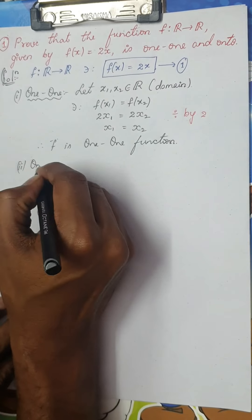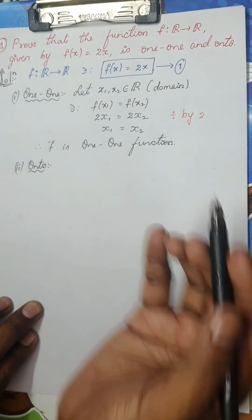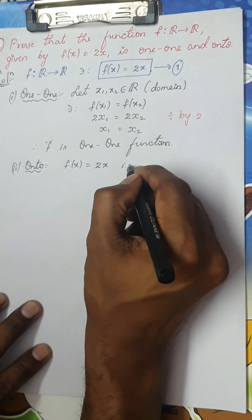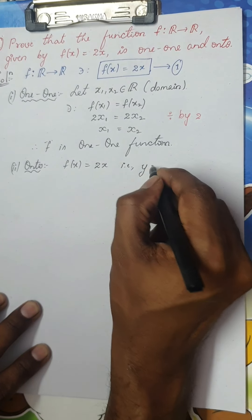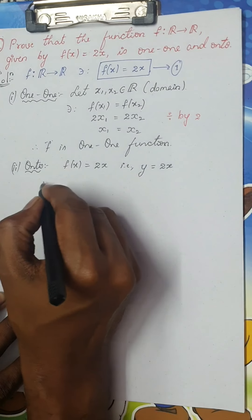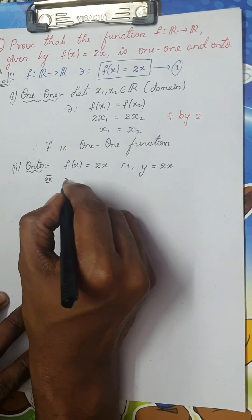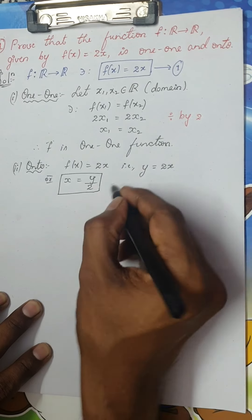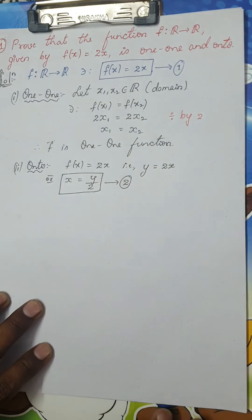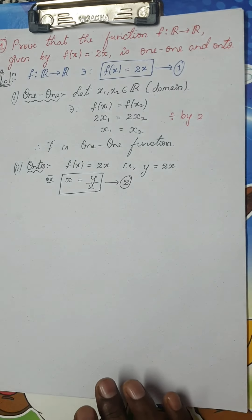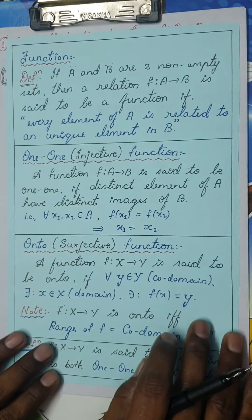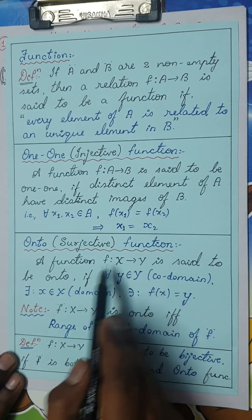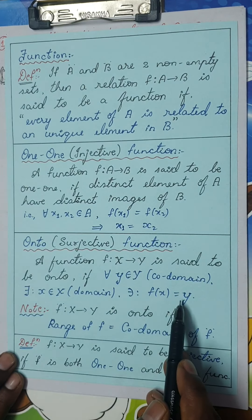Now let me go for onto — the second case, which is the onto case. We know f(x) = 2x, which means y = 2x, so x = y/2. Let me call this equation 2. I hope you remember the concept of the onto function: for all y belonging to the codomain Y, there exists an x in the domain X such that f(x) = y.